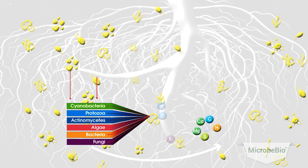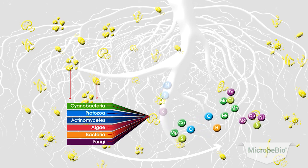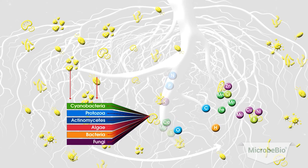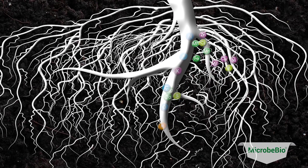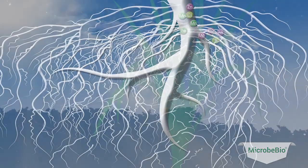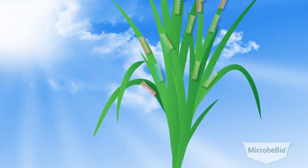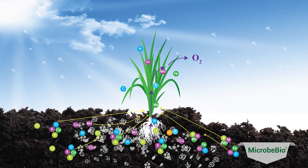As well as micronutrients such as boron, chlorine, manganese, iron, copper, zinc, and molybdenum. When combining MicroBio products, the plants will be able to absorb and consume the nutrients from the leaves, stalks, and roots.